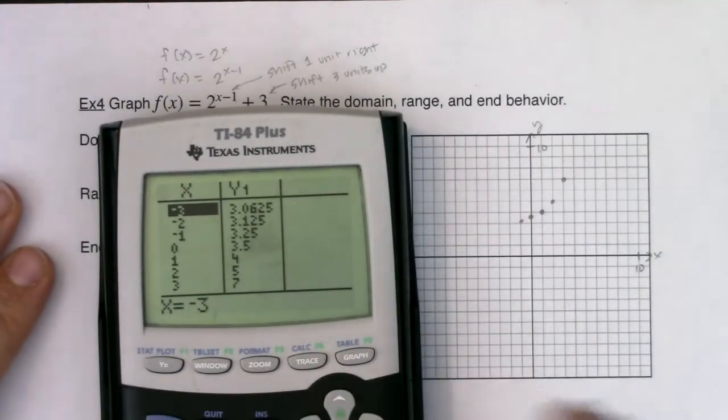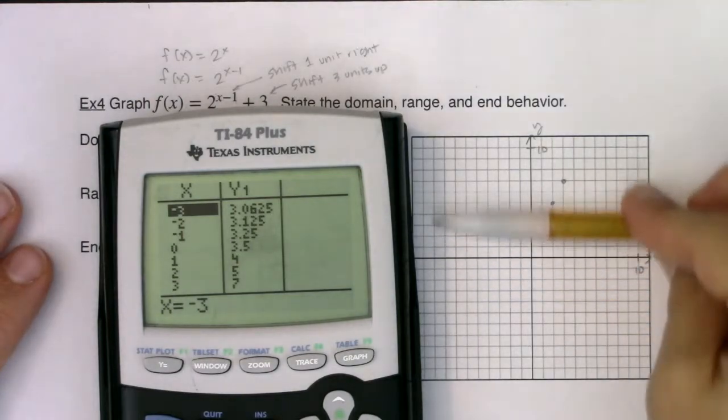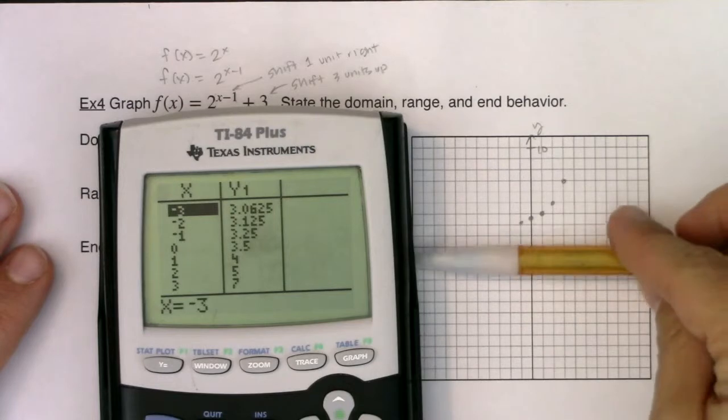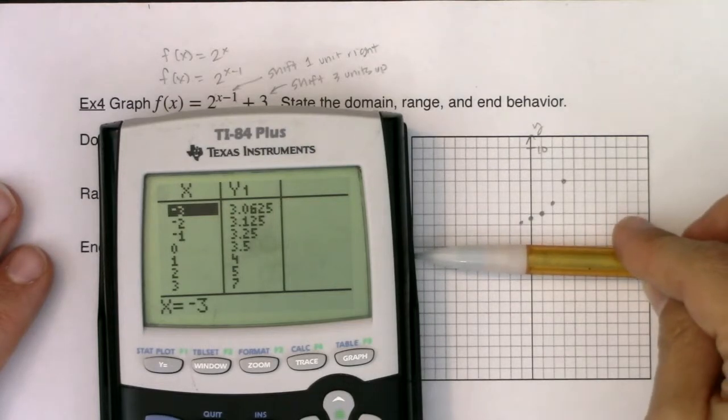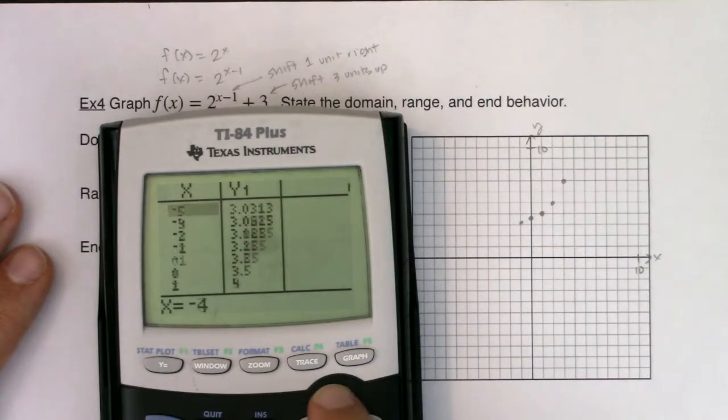Now, I think you can see that there's a new boundary line. In all of our previous examples, our horizontal asymptote was y equals 0. Well, we're shifting this function up 3 units. It's also going to shift the horizontal asymptote up 3 units.